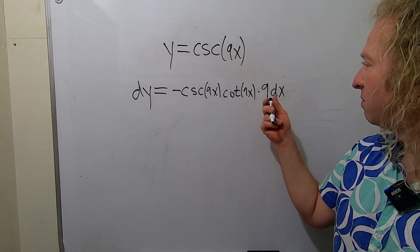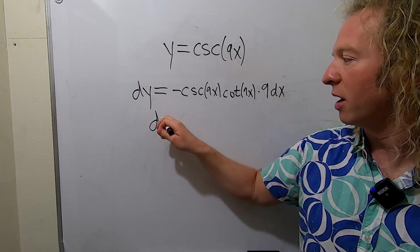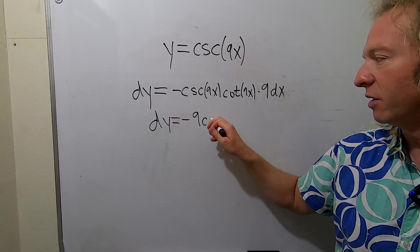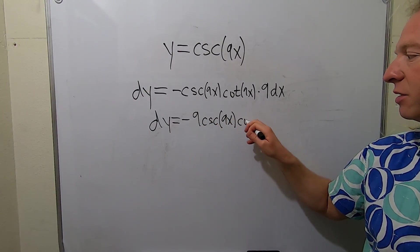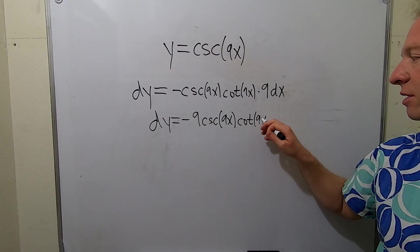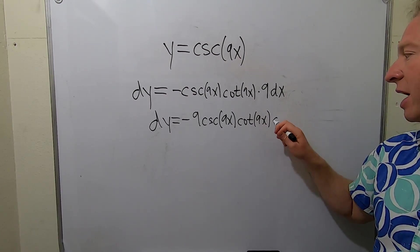The last thing to do is maybe put the 9 in the front. So we have dy equals negative 9 cosecant of 9x cotangent of 9x, and then we have our dx at the end.